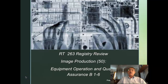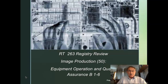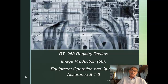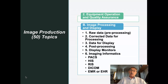Hi guys, this is Rich. I am going to record the next section that I've been assigned this year. This is from the content specs: image production, equipment, operation, and quality assurance. On page 7, this is 2B, 1 through 6. And it has to do with quite a number of terms that we use in relationship to digital imaging and digital imaging processing.